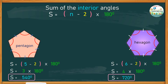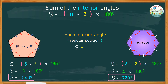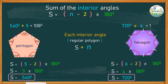Now that you know how to find the sum of the interior angles of a polygon, we can also find the size of each interior angle of a regular polygon by simply dividing the sum by the number of sides. For example, the sum of the interior angles of a pentagon is 540, divided by 5, giving a quotient of 108 — so each angle of a pentagon is 108 degrees. For a hexagon, 720 degrees divided by 6 means each angle measures 120 degrees.